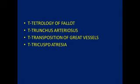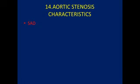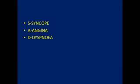The fourteenth mnemonic is for aortic stenosis characteristics. The heart has four valves — tricuspid, bicuspid, pulmonary, and aortic — which can develop stenosis or regurgitation. For aortic stenosis, the mnemonic is SAD: S for syncope, A for angina, and D for dyspnea.